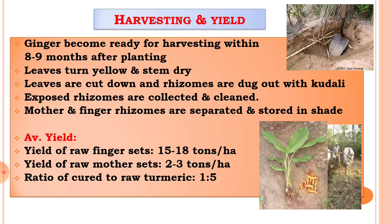The leaves are cut at ground level 15 days prior to the date of harvesting. One day before harvesting, a light irrigation is given for easy digging of the rhizomes.